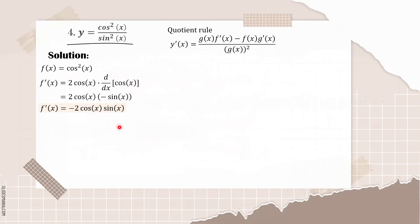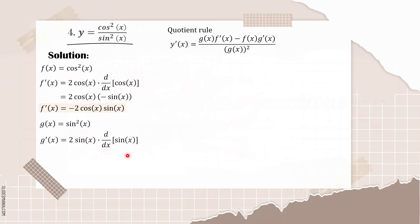Next is finding the derivative of g of x, which is our denominator, sine squared of x. We use the same procedure. The derivative of sine squared is equal to 2 sine, copy x, times the derivative of sine of x. The derivative of sine of x is cosine of x.